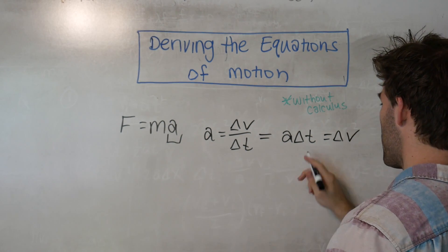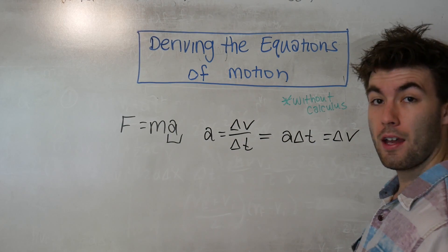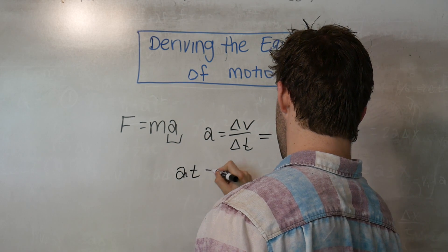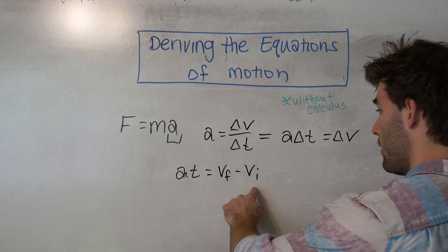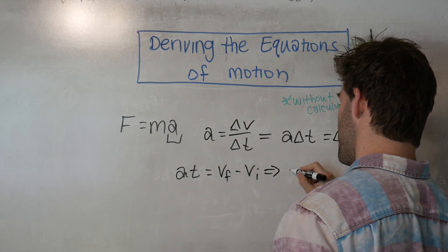Now like I said, we're going to define delta t as just t, and delta v as vf minus vi. So that gives... Adding the vi over will give us our first equation of motion.